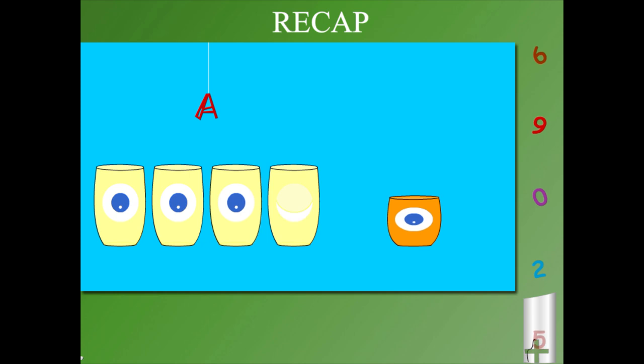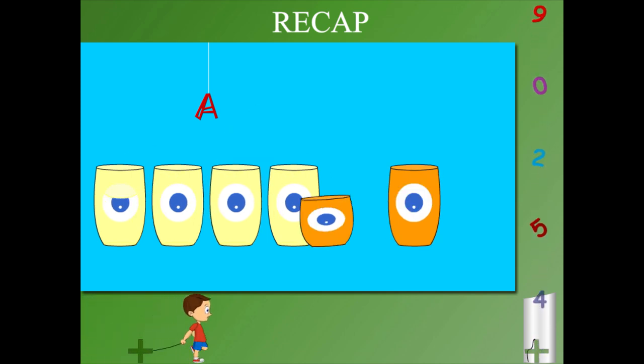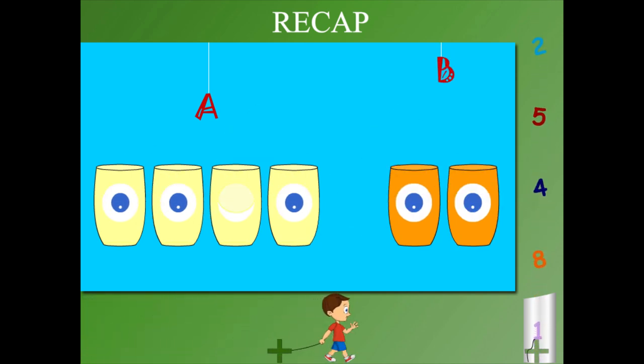Here come orange glasses. They are 1 and 2. They are labeled B.